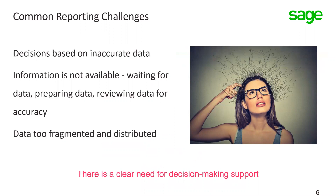From lots of research, there are several common reporting challenges. Information is often based on inaccurate data — people have information in their systems but need it to make decisions: how many salespeople to hire, what to do with inventory or purchasing, or what cash flow looks like. Information is also not always available, meaning data within systems exists but it takes a long time to prepare a report, gather data, and verify accuracy. The data is fragmented and distributed everywhere. There is a clear need for decision-making support — getting information from data within your systems.